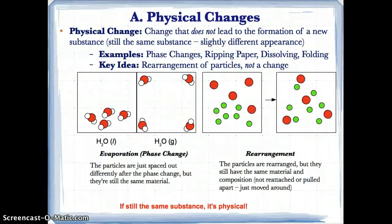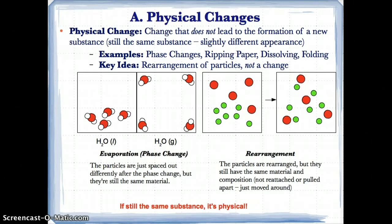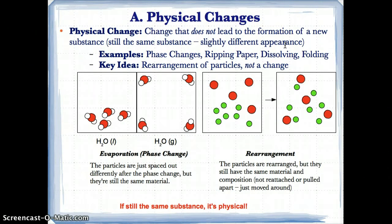Let's talk about physical changes. We know that physical properties involve properties that do not change the composition of the substance. Similarly, a physical change is a change that does not lead to the formation of a new substance — meaning it's still the same substance, but with a slightly different appearance. For example, if you melt something, it's going to look different, but it's still the same substance.